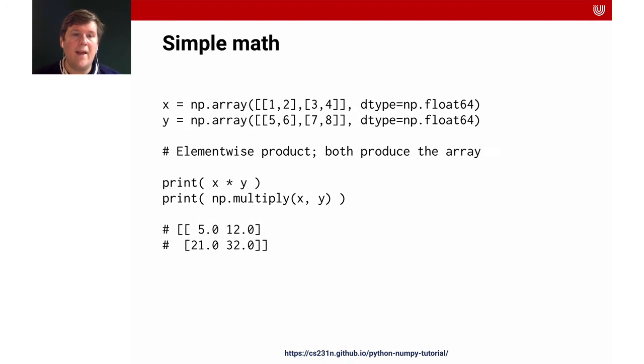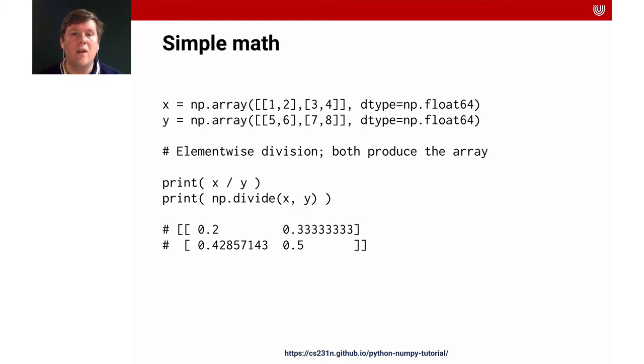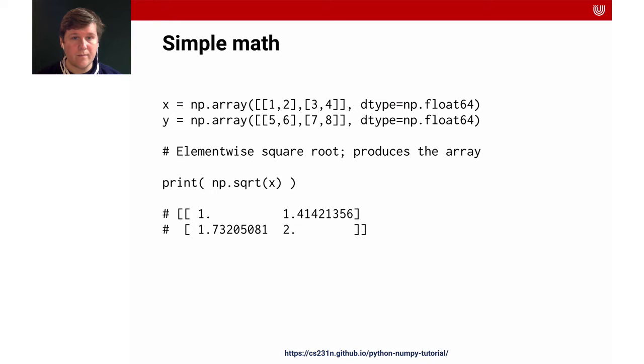You can do the element-wise product expressed as x star y. You can also use numpy dot multiply. You can do the element-wise division which will produce an array. So you do x divided by y and numpy divide xy. You can also take the element-wise square root which will produce an array. You do numpy dot square root on x and it will take the square root on each element in x.